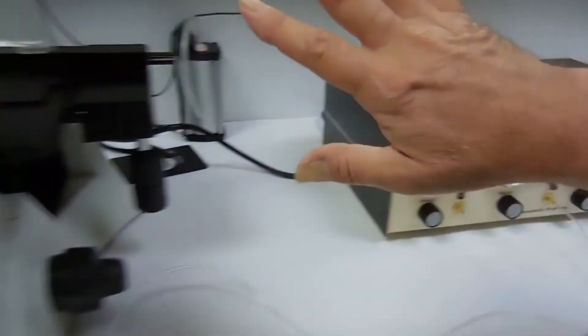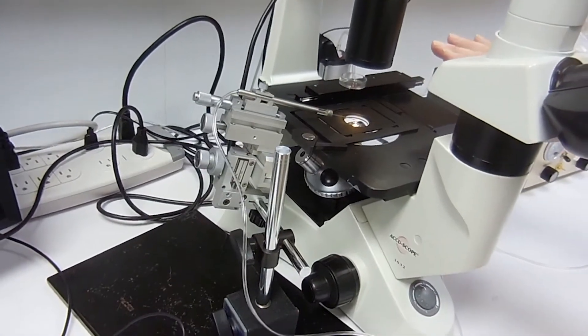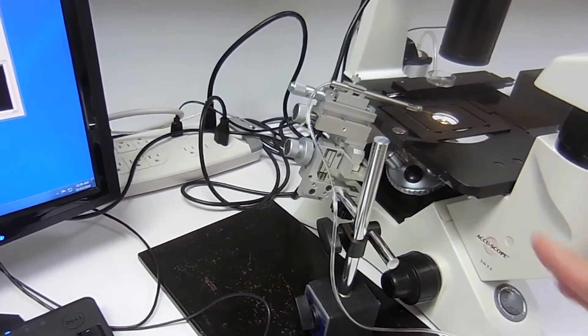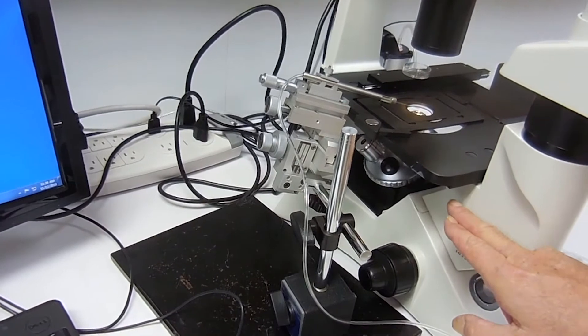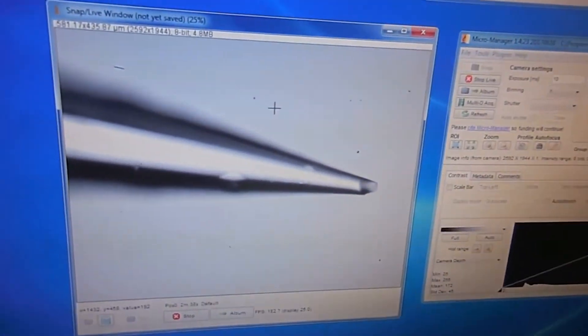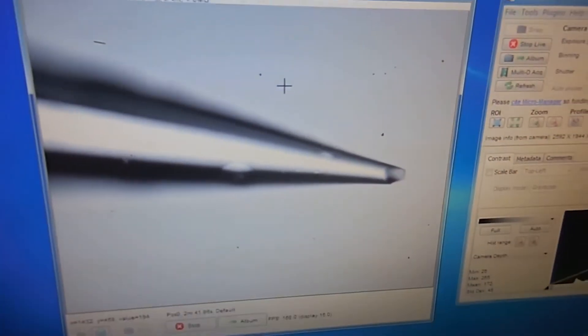Over here on the microscope we have the Pica nozzle set up with a 2 micron tip with distilled water in it and it's basically being held. We're focusing on it with a 20x microscope objective and then we'll go over to the monitor over here and you'll actually see the very tip of the micropipette in focus.